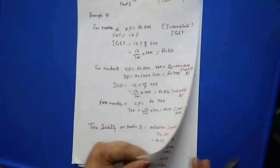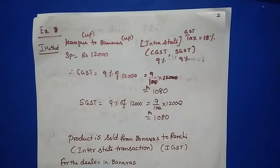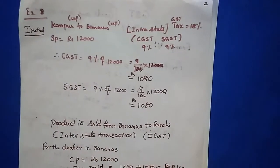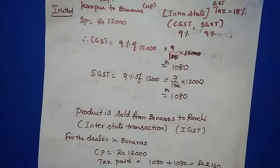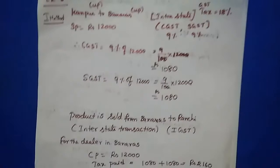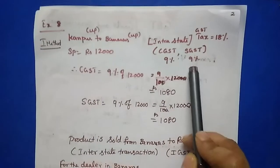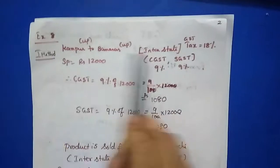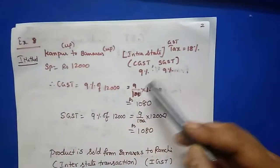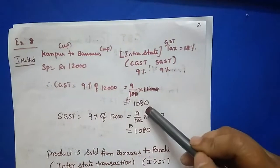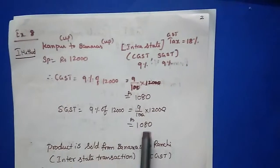Now come to Example 8. I am teaching two methods - you can use whichever you like. First method: Kanpur is in UP, Banaras is also in UP, so it is intra-state. Calculate CGST and SGST. GST is 18%, therefore CGST is 9% and SGST is 9%. SP is given as 12,000. So CGST = 9% of 12,000 = 1080 rupees and SGST = 9% of 12,000 = 1080 rupees.